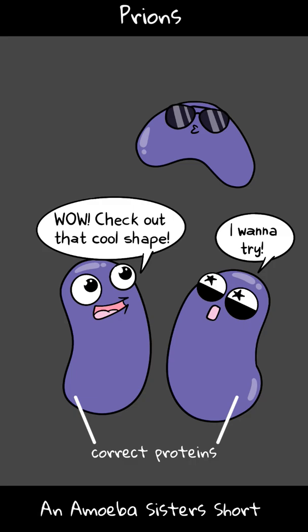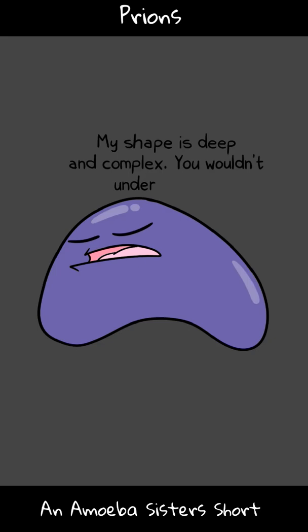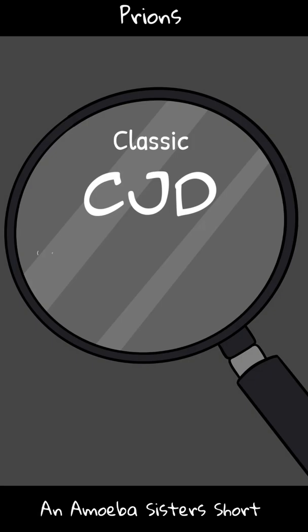This description is simplified, but there is still a lot that needs to be understood about prions. Classic CJD is an example of a disease in humans caused by prions, and scientists continue to explore potential prion involvement in other neurodegenerative diseases.